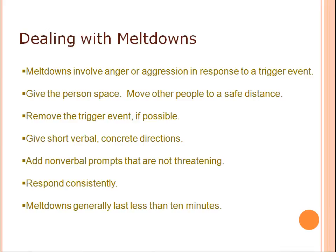Although anyone can have a meltdown, library staff are particularly upset when adults and children with disabilities become disruptive. Staff training can provide these guidelines for difficult situations. Meltdowns involve anger or aggression in response to a trigger event. Remove the trigger if possible. Give the person space. Move other people to a safe distance. Provide short, verbal, concrete directions. Add non-verbal prompts that are not threatening. Respond consistently. Remember that meltdowns generally last less than 10 minutes.